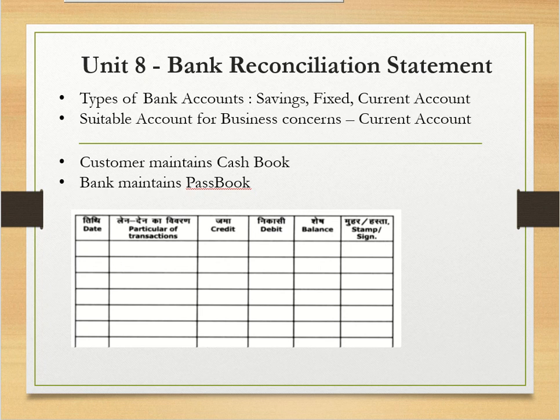Hello students, now we are going to be Unit 8, Bank Reconciliation Statement. Bank accounts can be of different types. Savings account is where common people use. Fixed deposit account is also for common people and also used for organizations. Current account is something that every organization uses to manage their day-to-day operations.